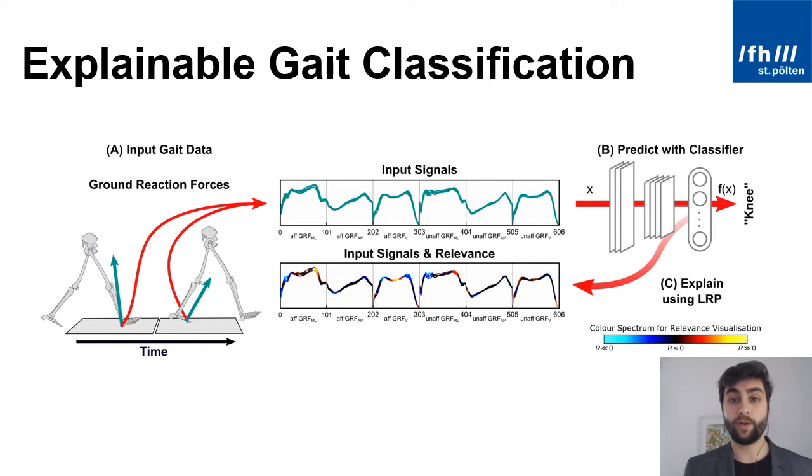To tackle this problem we adapted a well-known explainable AI method called layer-wise relevance propagation for one-dimensional input data. This method pinpoints regions of the input signals that are responsible for the prediction. In our example here these yellow regions are the most relevant for the prediction.